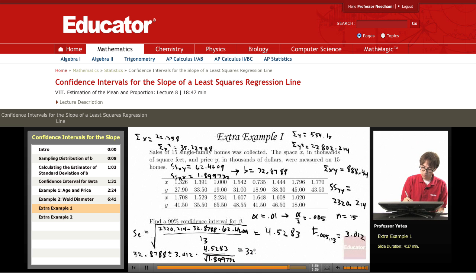This gives me 32.8788 plus or minus 9.896605. Subtracting that from b and adding it to b gives me my confidence interval. So the lower limit, 22.98219, and my upper limit is 42.77541.